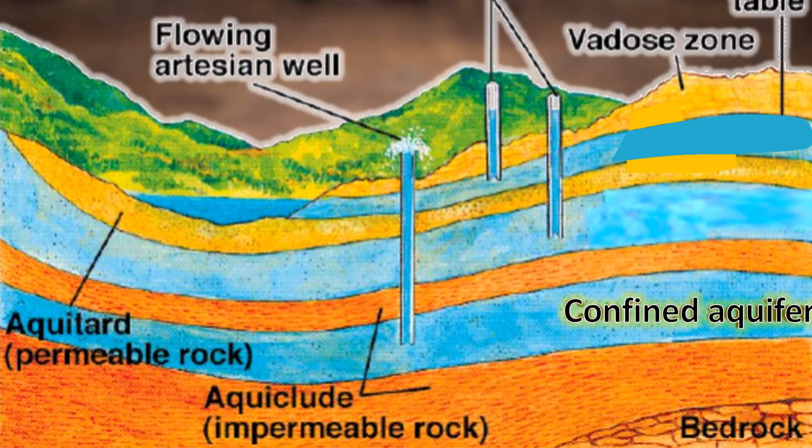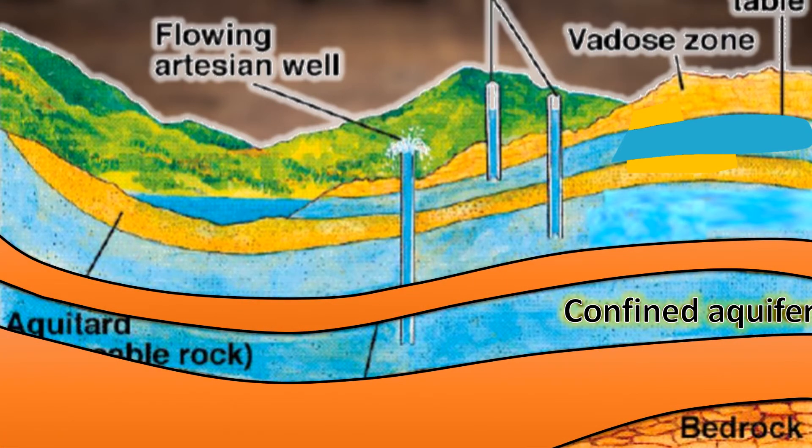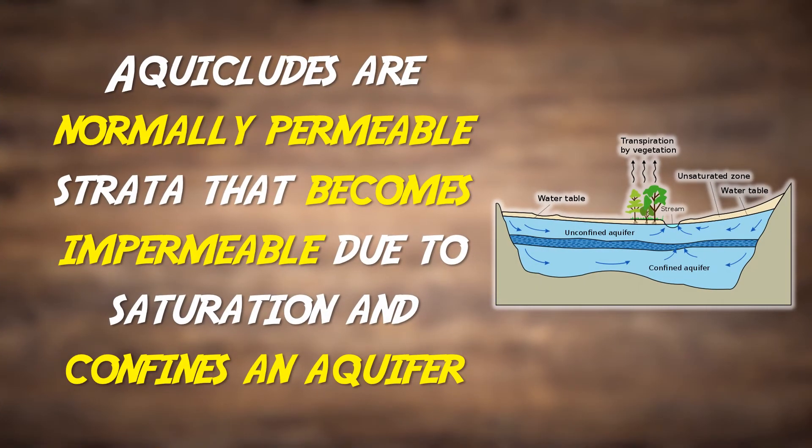Then you have confined aquifers. These are pockets of groundwater trapped between two impermeable aquacludes, preventing movement between both layers. Thus, aquacludes are normally permeable strata that becomes impermeable due to saturation and confines an aquifer.